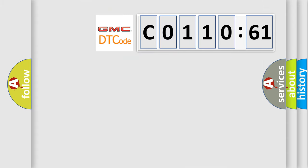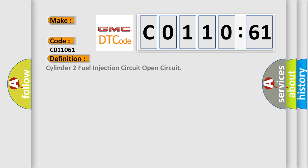So, what does the diagnostic trouble code C011061 interpret specifically for GMC car manufacturers? The basic definition is Cylinder 2 Fuel Injection Circuit Open Circuit. And now this is a short description of this DTC code.